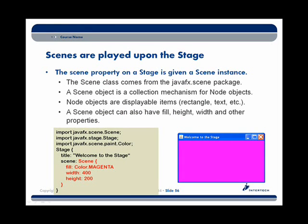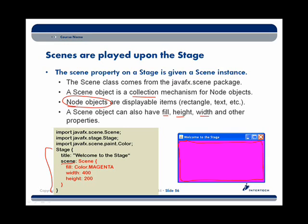Inside of a stage, we have scenes. A scene essentially represents all the content that goes on inside of our stage. When we create a Stage instance, we set the scene property to define a Scene instance. A scene is an object that also has properties — for example, it can display a fill, it has a height, and it has a width. Most importantly, inside of a scene, a scene is a collection mechanism for a set of node objects that are our displayable items — things like rectangles, text, and any kind of widget. So the scene is a container inside of the stage container.